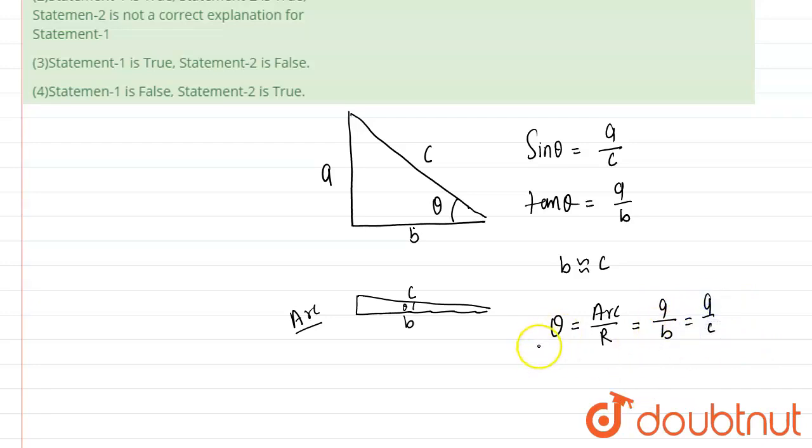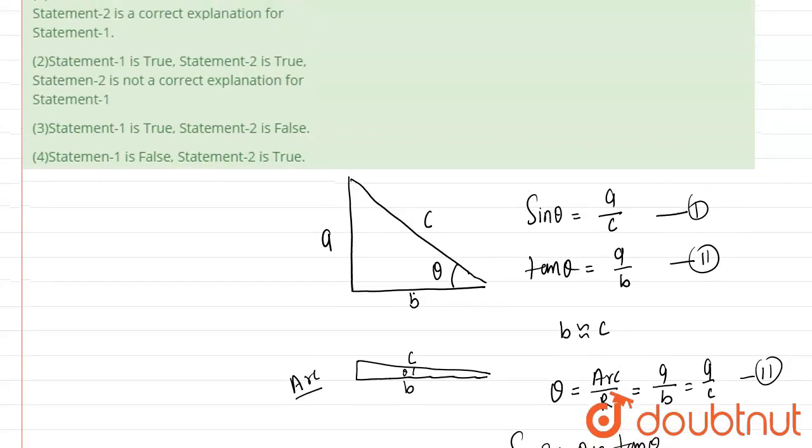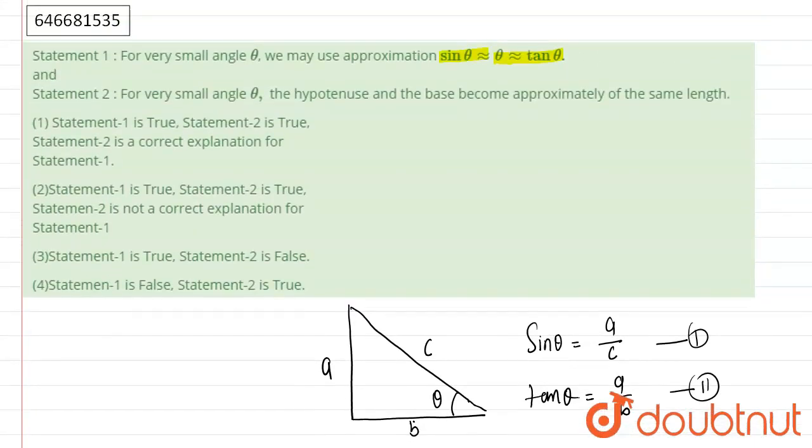So from equations one, two, and three, we can say sine theta is approximately equal to theta is approximately equal to tan theta, and it is possible when hypotenuse is approximately equal to base.